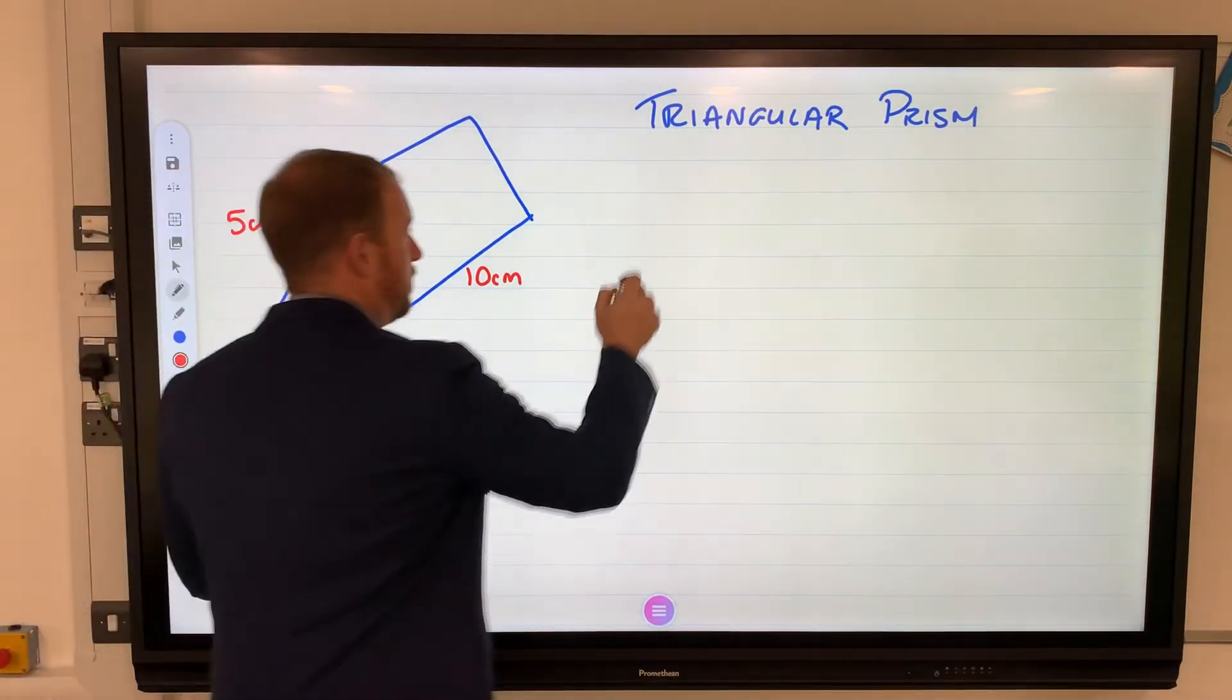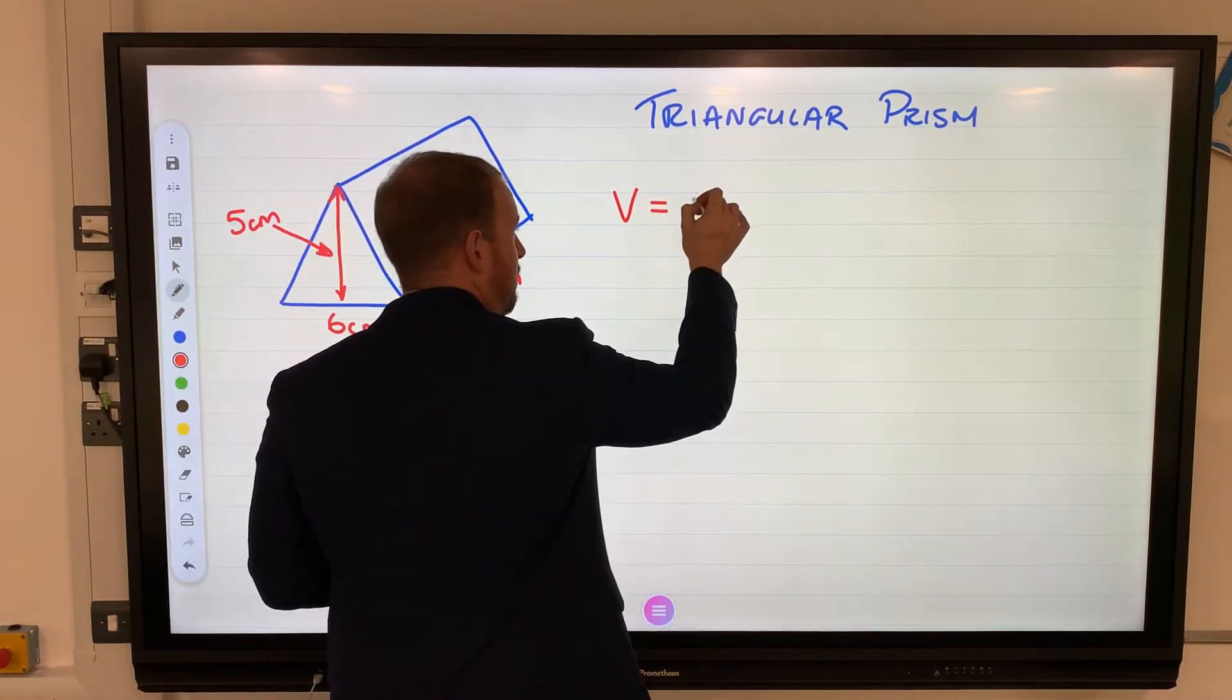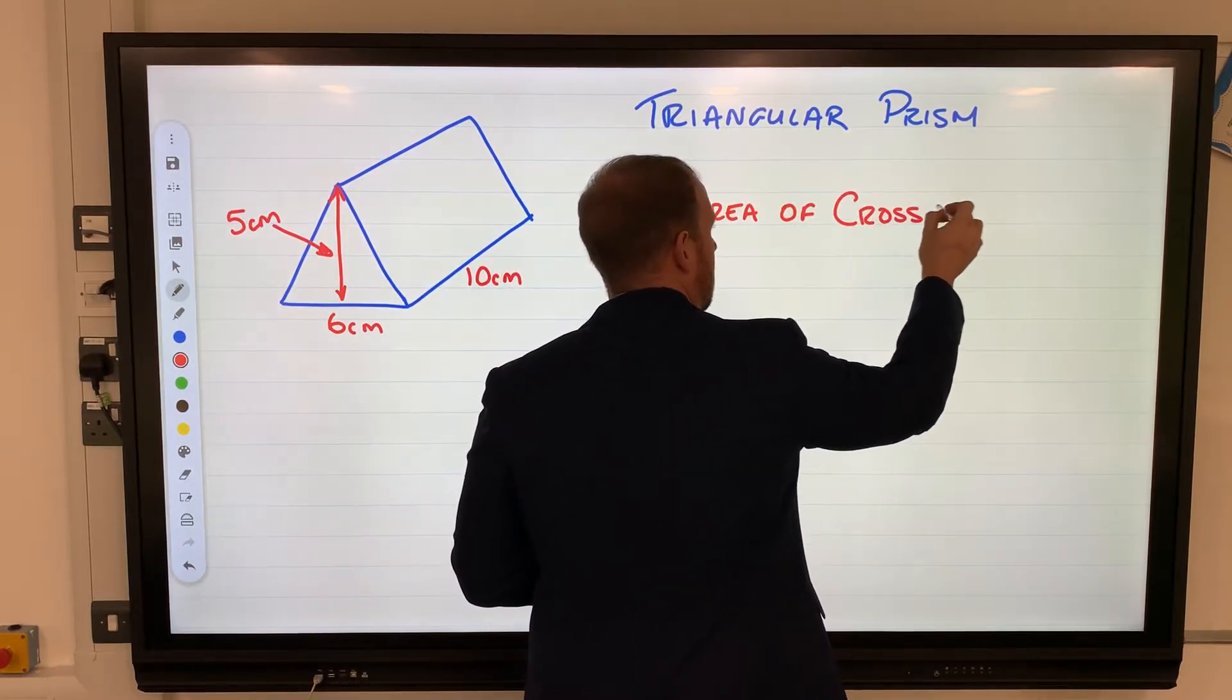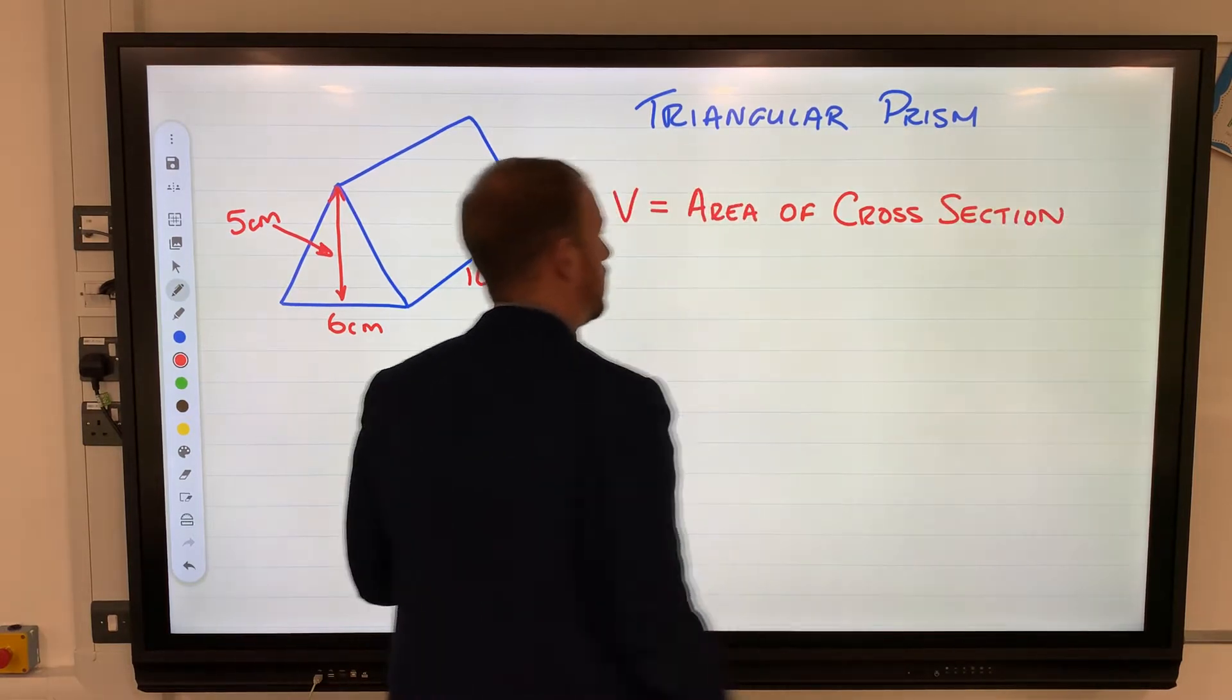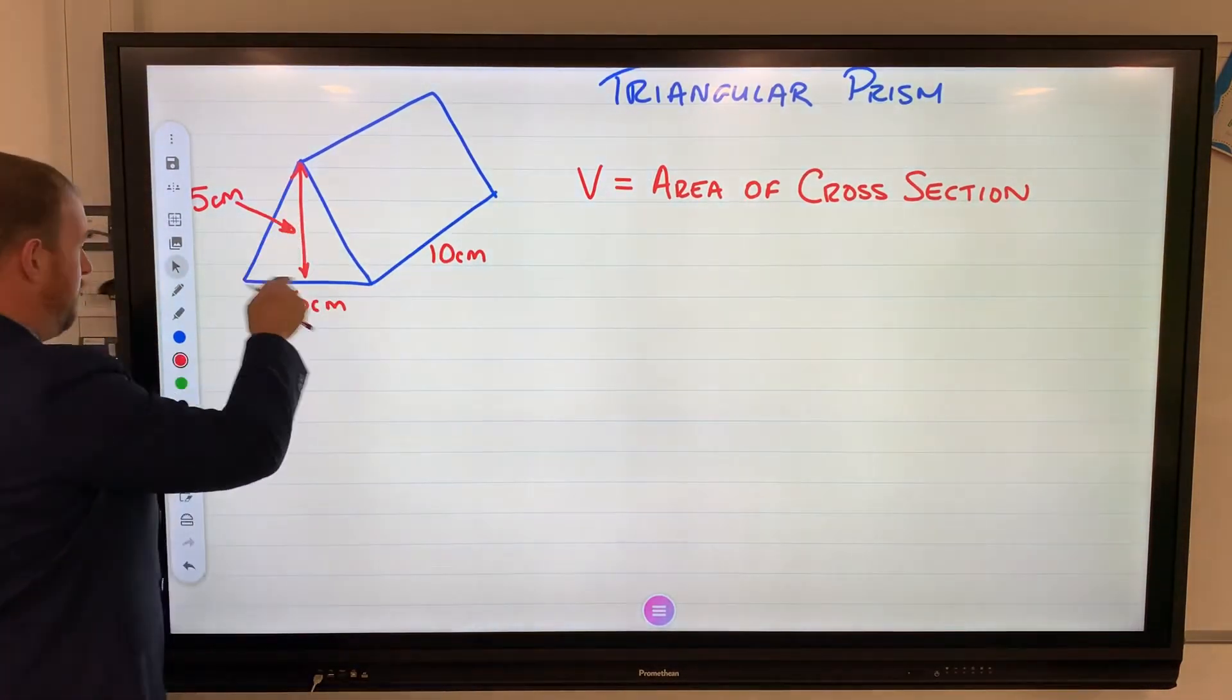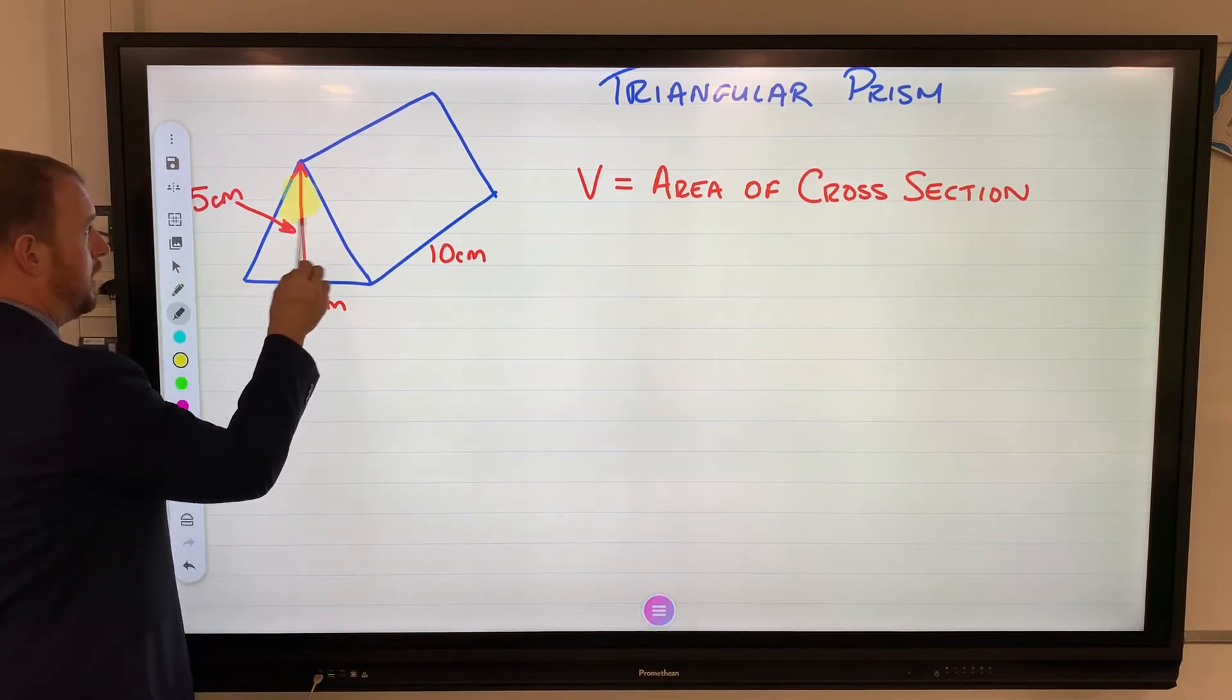For any sort of prism, volume equals the area of cross section. Cross section is the shape on the front. This shape is a triangle, so the volume would be the area of this front shape here.